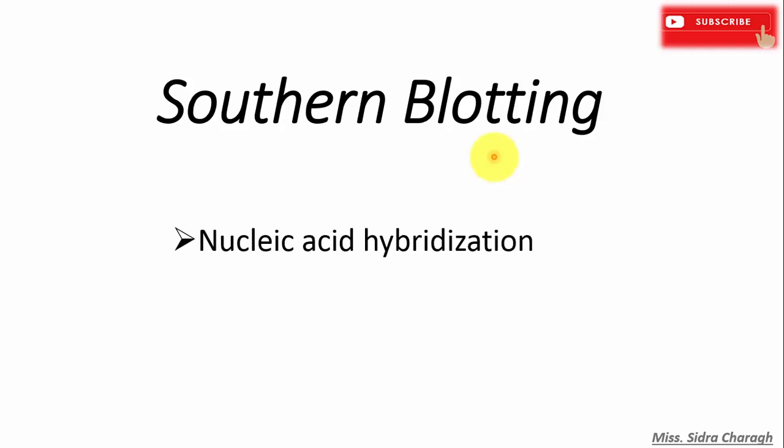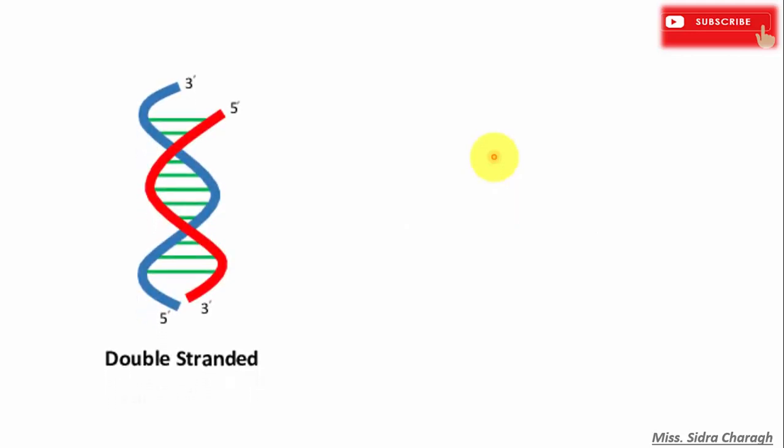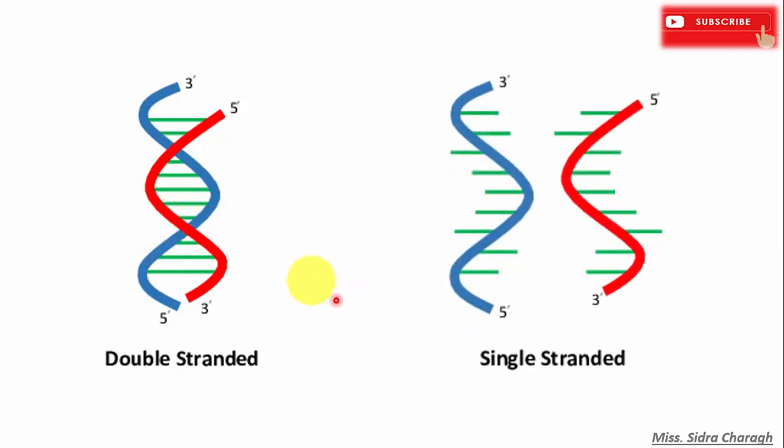But before we go into the discussion of Southern blotting, it is important to understand three concepts. The first is nucleic acid hybridization and probes and blotting. So let's study them one by one. First we study nucleic acid hybridization. We have already studied denaturation and renaturation of DNA. If we heat the DNA at high temperature, this double-stranded DNA molecule converts into single-stranded DNA molecule.